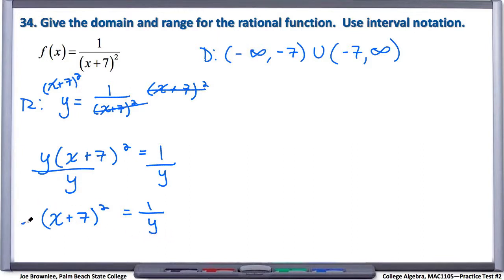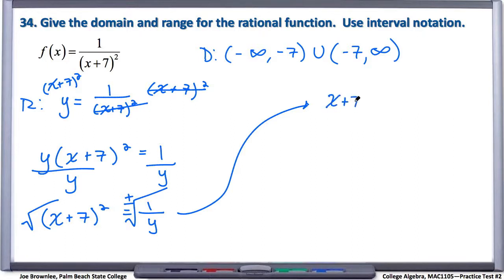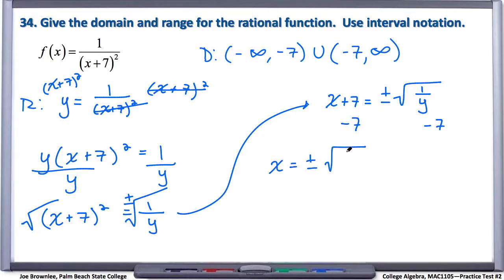We're still trying to get x by itself, so take the square root of both sides — in this case we do include plus and minus. On the left we have x plus 7, and on the right plus and minus radical of 1 over y. Then subtract 7 from both sides, giving us x equals plus and minus radical of 1 over y, minus 7. Note that the minus 7 is not under the radical.